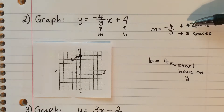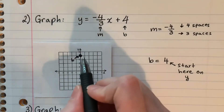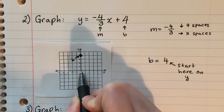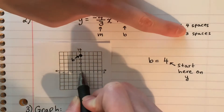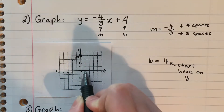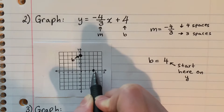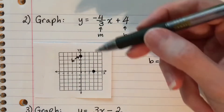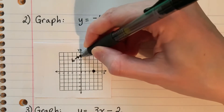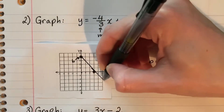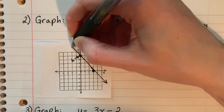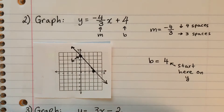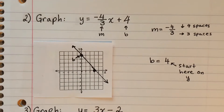Now I go four down — one, two, three, four — and three to the right — one, two, three — and put a big point. Then connect the two points with a line. It's better to do it with a ruler, but we'll go ahead and just draw it. Easy.